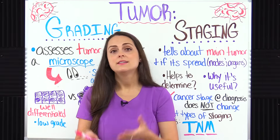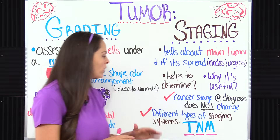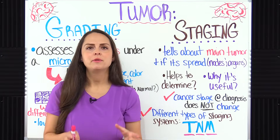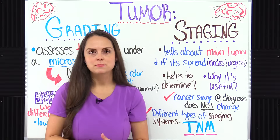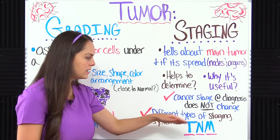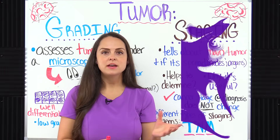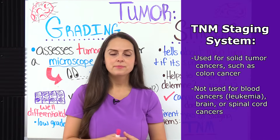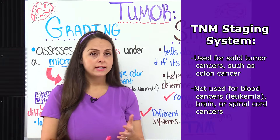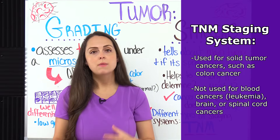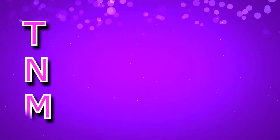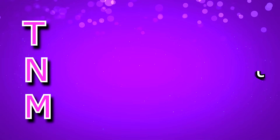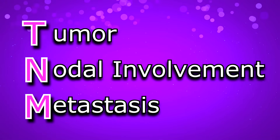So what are these staging classification systems? There are different types depending on the cancer. The one you want to be familiar with as a nurse, especially for exams, is called the TNM staging system. This is used for solid tumor cancers like colon cancer, and it's not used for blood cancers such as leukemia, or brain and spinal cord cancers. TNM is an acronym that stands for tumor, nodal involvement, and metastasis.